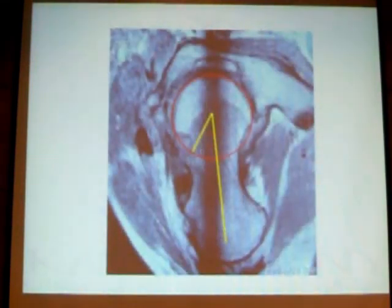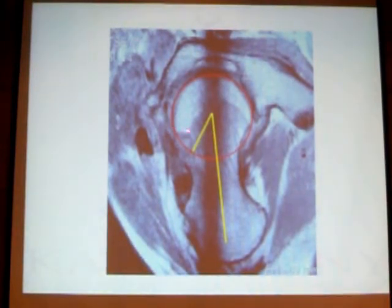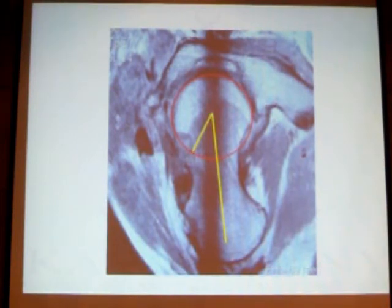The same line, the same angle — after the bump was resected, we measured the alpha angle again and found a clear offset here. Looking at the alpha angle, the angle is now lower than 40 degrees, confirming successful decompression.